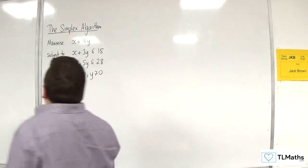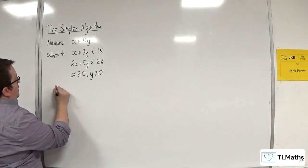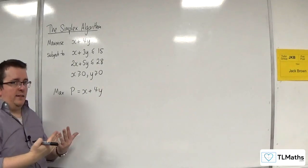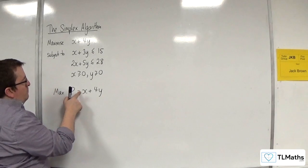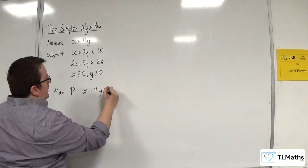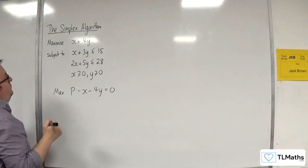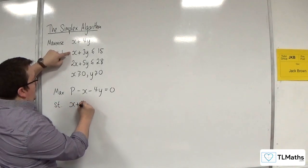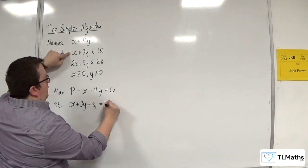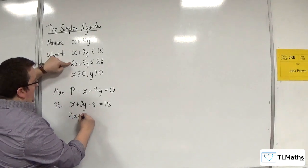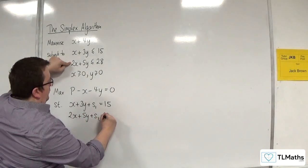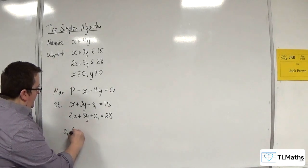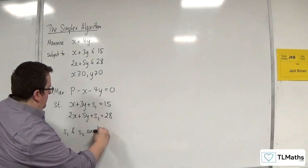The first thing I'm going to do is rewrite these. I'm going to maximise p equals x plus 4y, but I need to get it into standard form. So I need to subtract x and 4y from both sides and have it equal 0. Subject to x plus 3y, I'm going to add on a slack variable s1 to make it equal to 15, and add a slack variable s2 equal to 28. So s1 and s2 are slack variables.